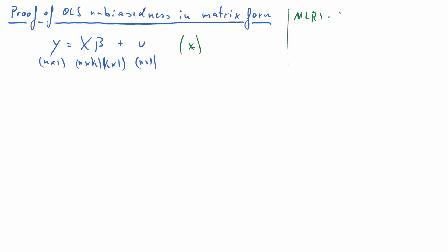We also have to recall what the assumptions are we are working with. So these are the multiple linear regression assumptions. The first one being that this is actually the correct population model.